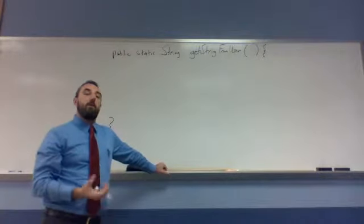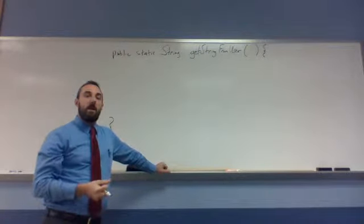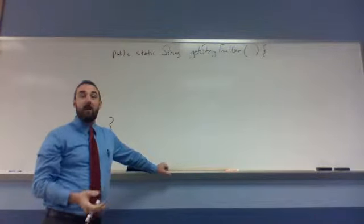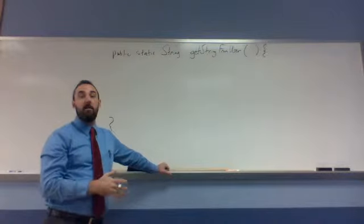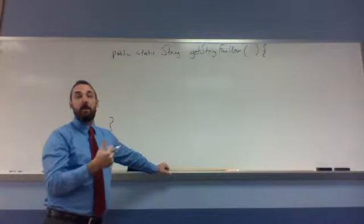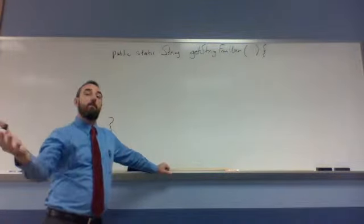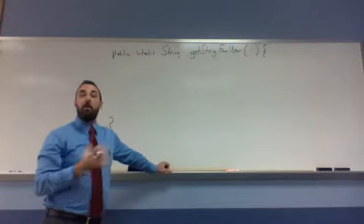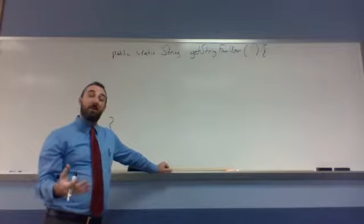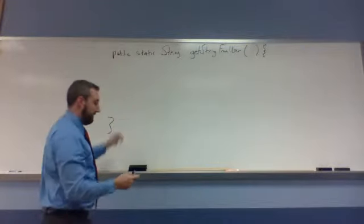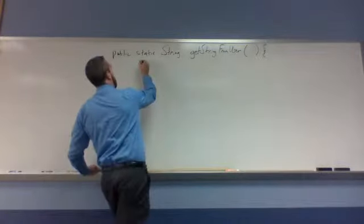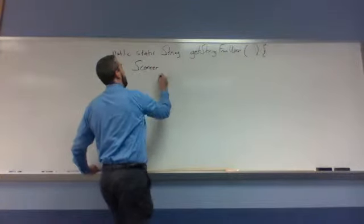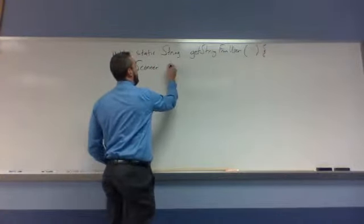Now we're going to write the method. What we're going to use is an object that's already been defined in the Java language - it's a thing called a Scanner. What a Scanner does is scan: it can scan a keyboard, it can scan a file. It can look at some place the computer can see and tell you what information is there. So we need to make a Scanner. We're going to create a variable inside this method to store a Scanner object. So: Scanner, let's call it sc.